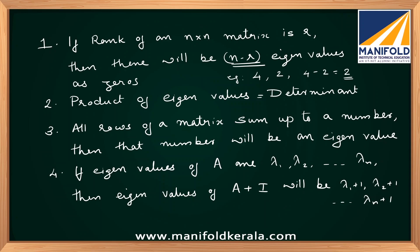The fourth point is an important property: if the eigenvalues of a matrix A are lambda 1, lambda 2, ..., lambda n, then the eigenvalues of the matrix A plus I will be lambda 1 plus 1, lambda 2 plus 1, lambda 3 plus 1, ..., lambda n plus 1. To recap all four points: rank R of an n by n matrix gives n minus R zero eigenvalues; product of eigenvalues equals the determinant; all rows summing to a single number means that number is an eigenvalue; and eigenvalues of A plus I are each eigenvalue of A incremented by 1.